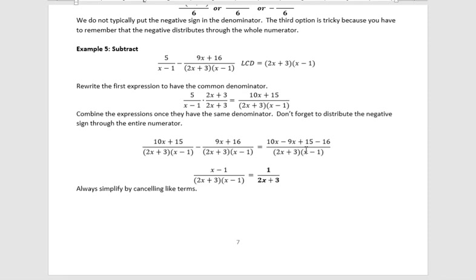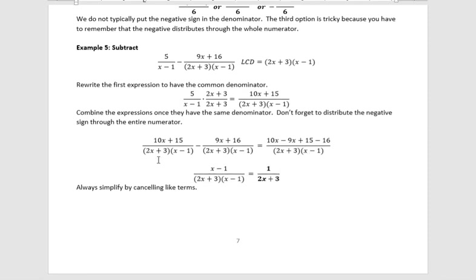Now, because they have the same denominator, I can combine those. The 10x plus 15 minus the 9x plus 16 that I had to start with. Don't forget to distribute, 10x minus 9x and 15 minus 16. And that's going to give me x and then 15 minus 16 is minus 1. Because I have a common binomial on top and bottom, I can cancel those out. When I cancel a binomial, I leave a 1 behind. So that leaves me 1 over 2x plus 3.